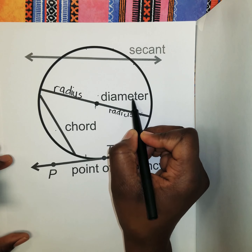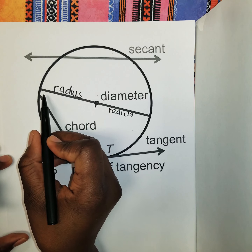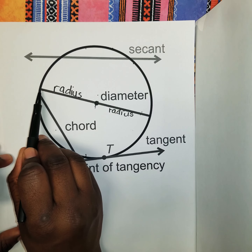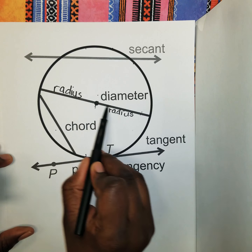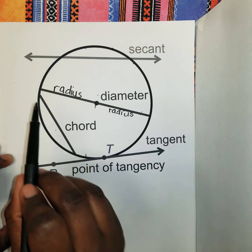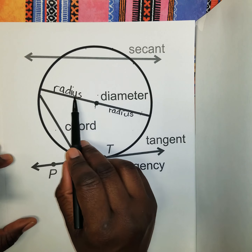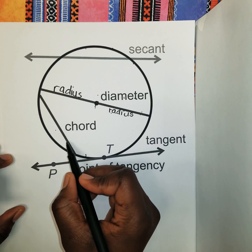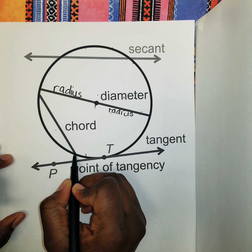Moving on from radius, we have the diameter. The diameter is basically the chord that passes through the center of the circle, going from one end to the other. The diameter is your longest chord, and we know that two radii make one diameter.